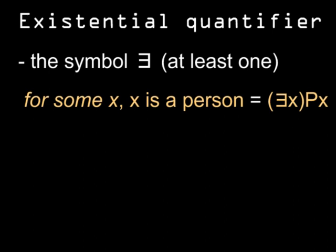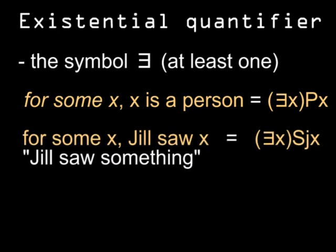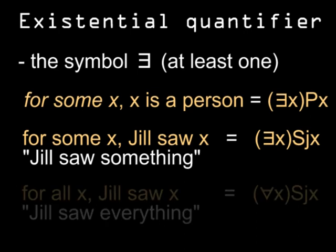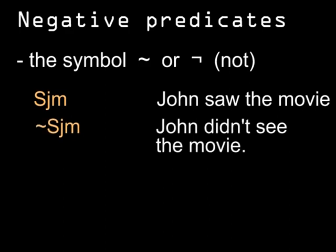Let's look at another one. For all x, Jill saw x. Here we're basically saying, Jill saw everything. But if we abandoned these quantifiers and just left the predicate, we'd end up with blank is a person, and Jill saw blank. Okay, let's move to another symbol.